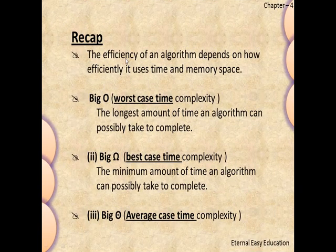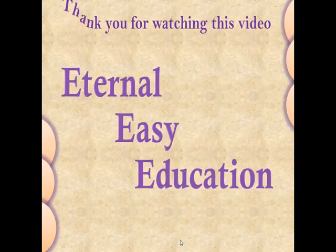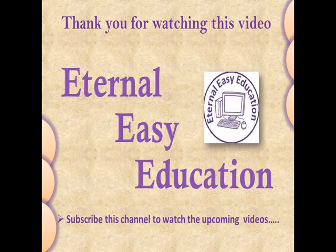The efficiency of an algorithm depends on how efficiently it uses time and memory space. We have learned three cases: worst case is the longest amount of time, best case is the minimum amount of time, and average case falls in between. Thank you for watching this video. If you like this video, please subscribe to this channel to watch upcoming videos. Thank you and have a good day.